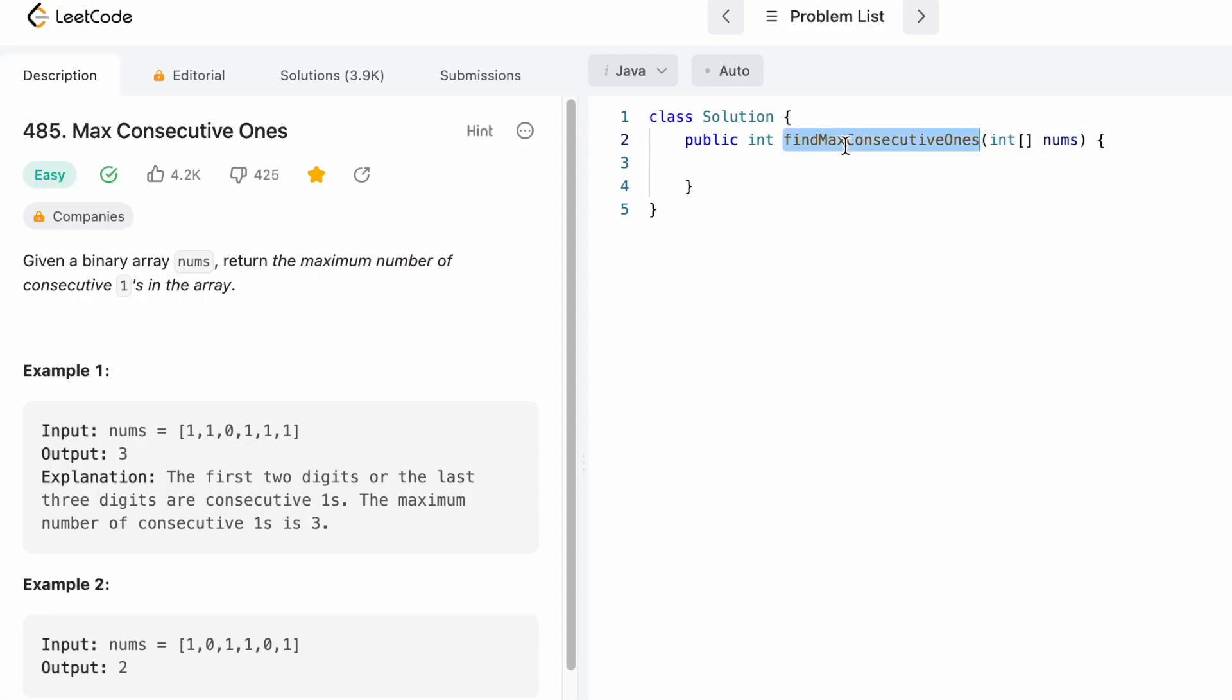This is the function given to us, and this is the input array nums. We need to return an integer variable denoting the maximum number of consecutive ones. Let's start off by creating the result variable. Max is going to be the output we are going to return, which will denote the maximum number of consecutive ones.